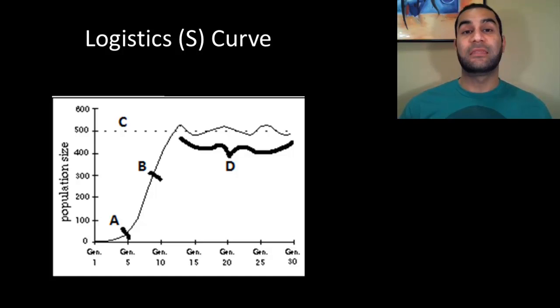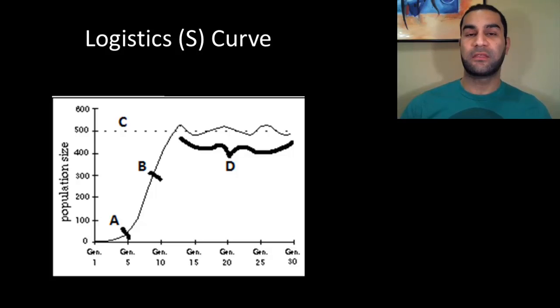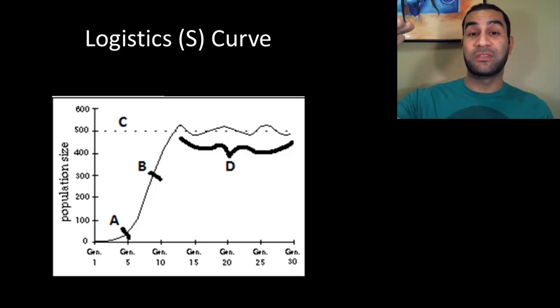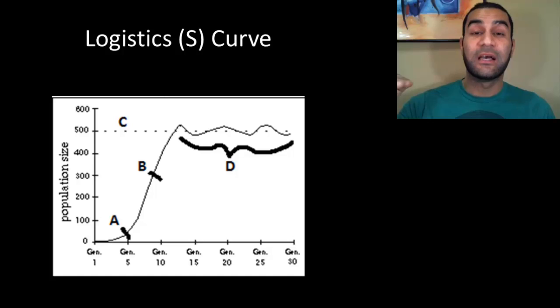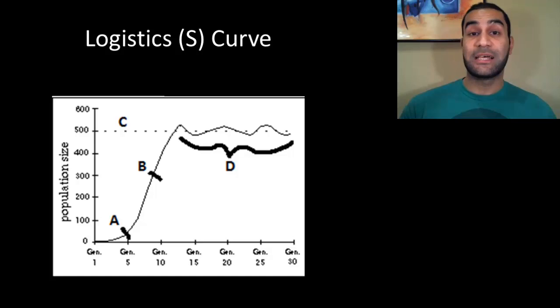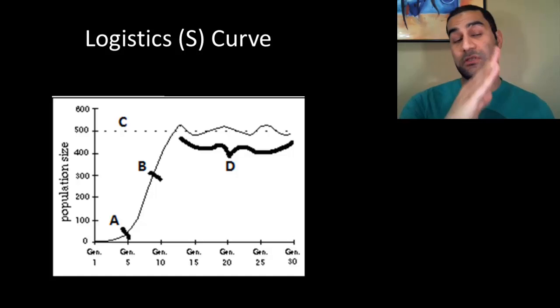As long as the carrying capacity stays consistent — say around 500 individuals — the population will be steady at that number. If something changes the carrying capacity, like a new competing species migrating in or a predator disappearing, there has to be a new stabilization phase. If you haven't yet hit the carrying capacity, you're still in a J curve with exponential growth and very little natural selection. Once you hit it, you're in an S curve and real competition and natural selection begins.